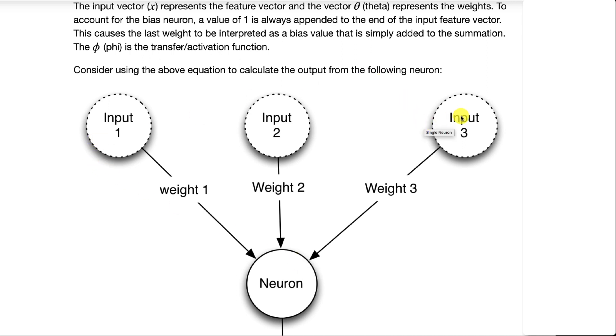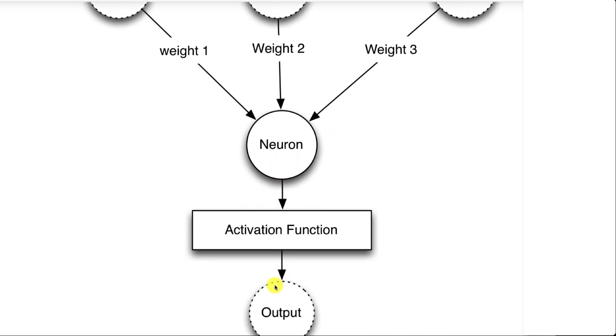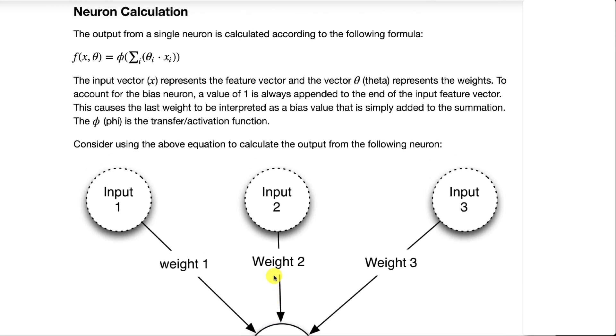You would multiply input 1 times weight 1, input 2 times weight 2, input 3 times weight 3, sum those all together.